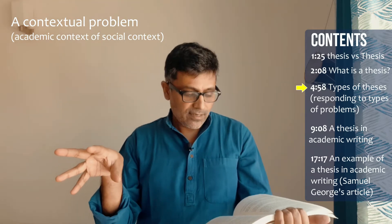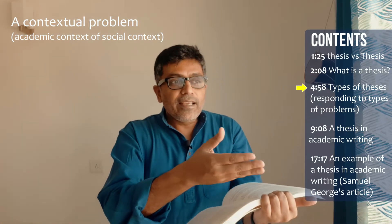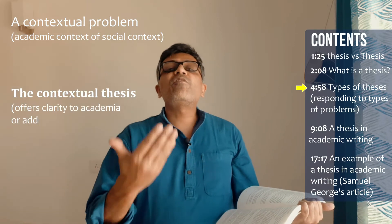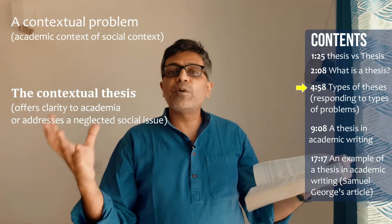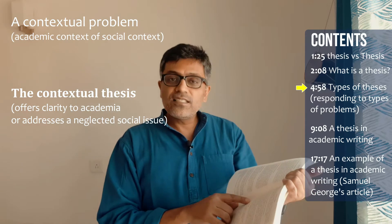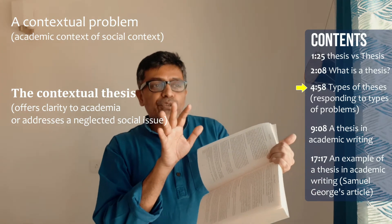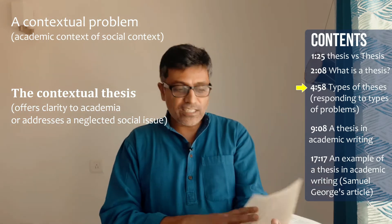The third type of problem was the contextual problem, where academia is confused or certain issues are not being addressed. The contextual problem leads to a contextual thesis where, in view of the problems facing academia, you are providing a clarification or understanding. So if there's a confusion about definitions, your thesis is a clarification of the correct definition — addressing the issues facing either academics or society.